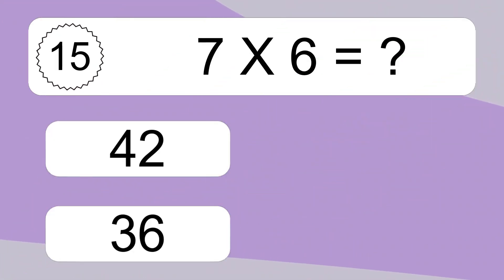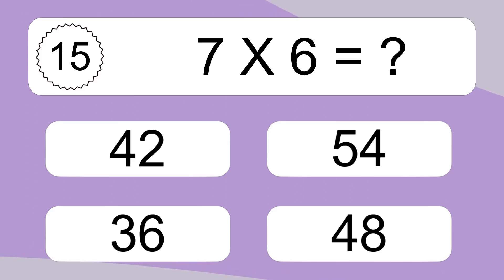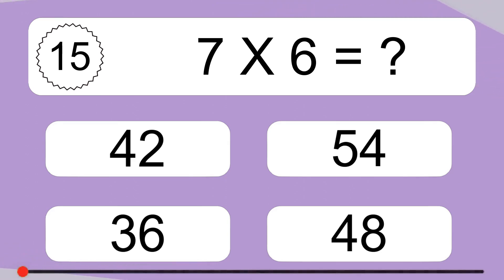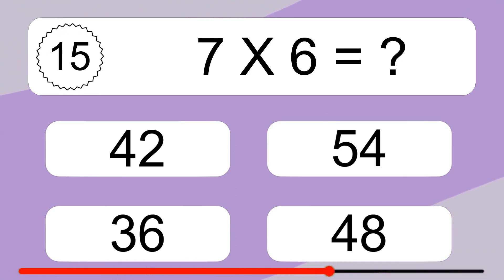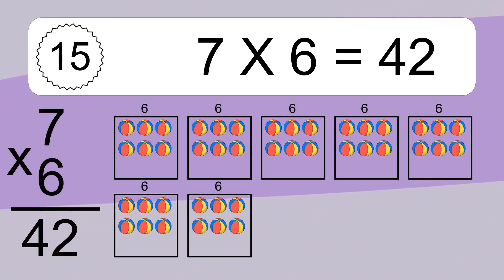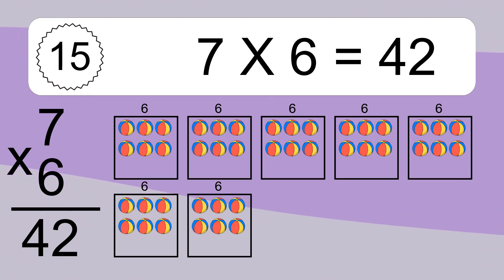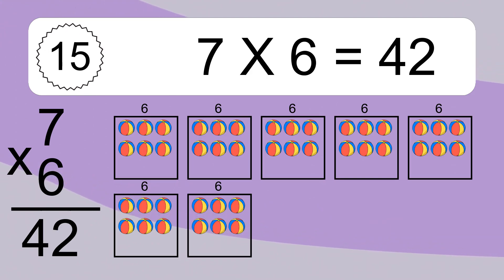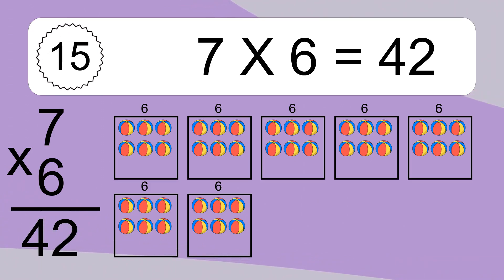7 x 6 equals what? 7 x 6 equals 42. We have 7 boxes, and each box has 6 colorful balls inside. If you count all the balls in all the boxes together, you will have 7 x 6 balls. This equals 42 balls.